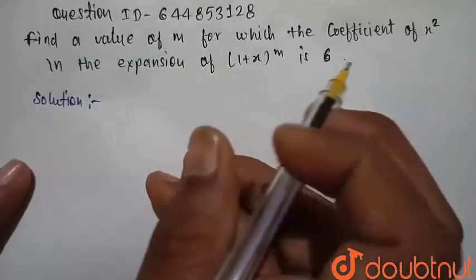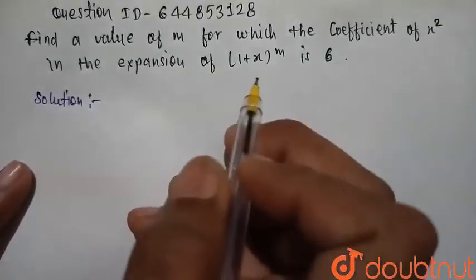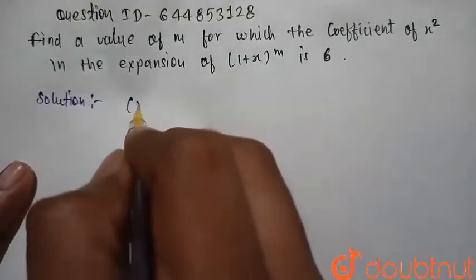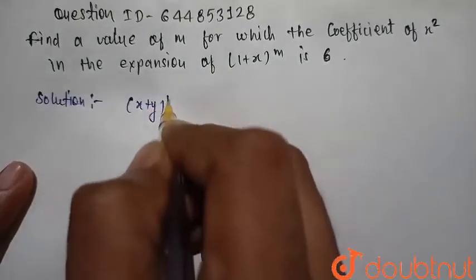Find the value of m for which the coefficient of x square in the expansion is 6. First we consider our general binomial expansion x plus y raised to power n.